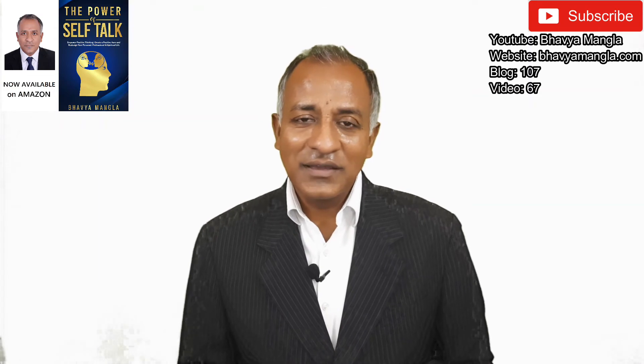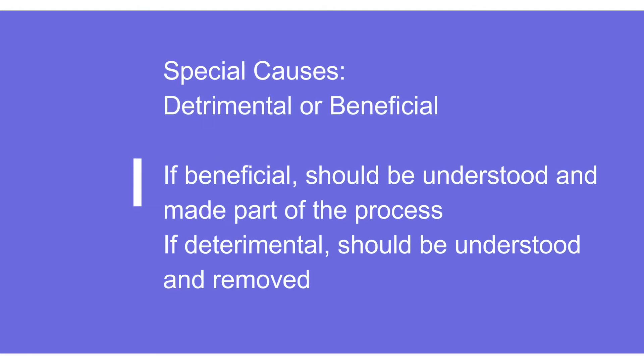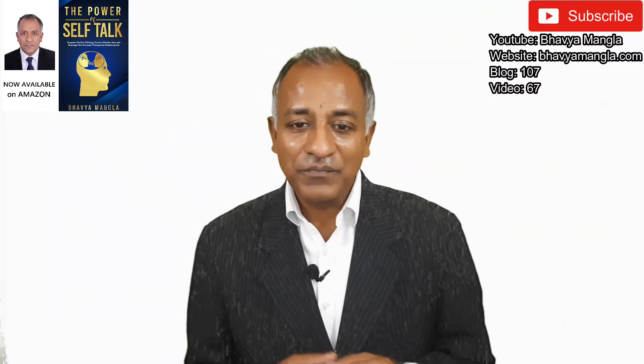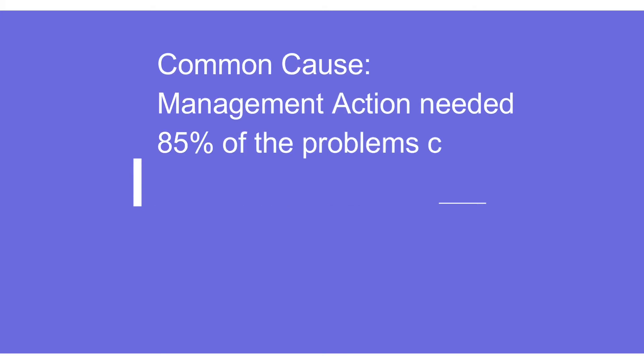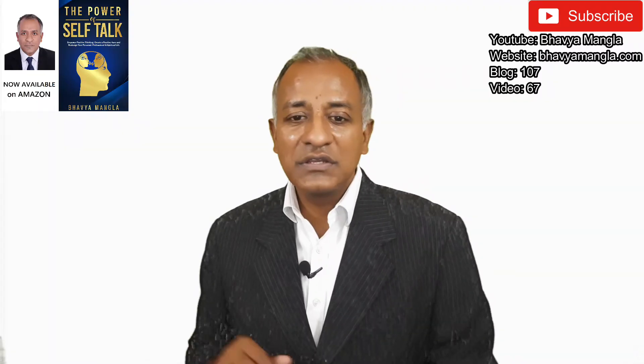An important and interesting point about special causes is that they can be detrimental or beneficial for the process. When detrimental, we need to identify why it is happening and remove it. When beneficial, we should understand what made the process more robust and try to make it routine. Generally, 85% of problems are resolved by addressing common causes with management support, while special causes contribute about 15% and can be addressed through local actions.